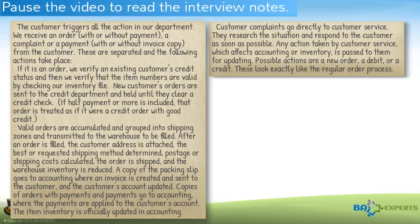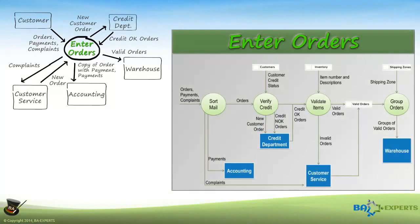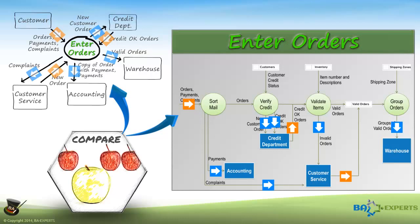In the event that you're not familiar with the situations these models depict, here are the original interview notes all decisions are based on. You might want to pause the video to familiarize yourself with the situation before proceeding. In this example, we exploded the enter orders process from the context diagram. If I now compare the exploded version with the context version, logic dictates that all flows going into or coming out of the enter orders process on the context diagram have to show up on the exploded version, going into or coming from one of the more detailed processes at that level, and vice versa.